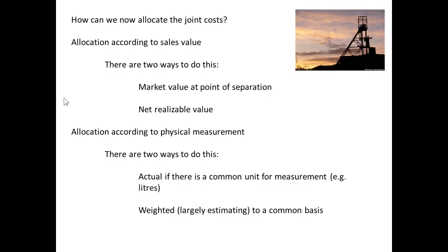We've now got to allocate the joint costs, and we can do it in a number of ways. We can take sales value — looking at the market value at the point of separation or the net realisable value — or we can allocate the joint costs according to some physical measurement. If there is a common unit of measurement that is one approach; otherwise, you may use a weighting on an estimating basis.